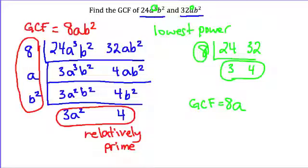And I'll do the same thing with the b's. I'll compare the powers: b squared and b squared are equal. So b squared is our lowest power of b. So a different technique for finding which variables or what the power of the variables that goes into the GCF.